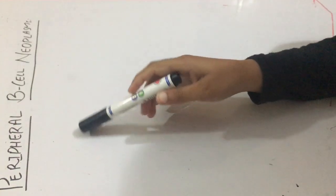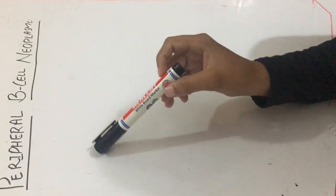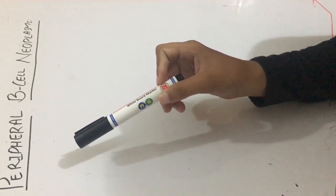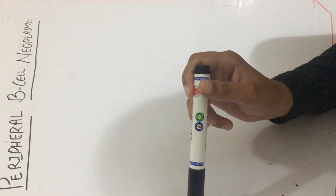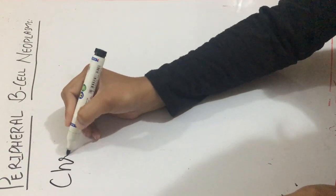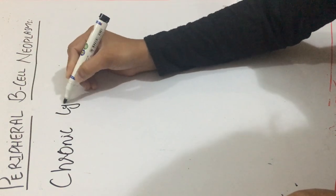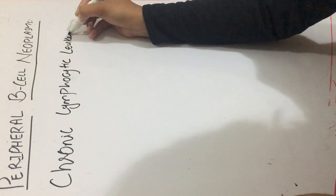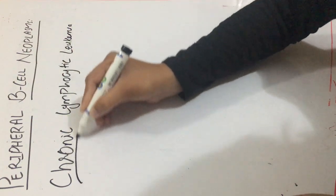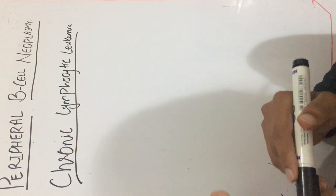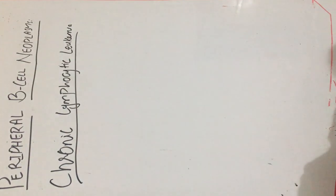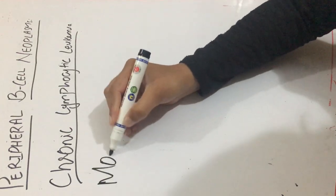Today the topic of discussion is peripheral B-cell neoplasms. In the previous lecture we discussed about the precursor B-cell neoplasms, mainly acute lymphoblastic leukemia. Now we will discuss about the peripheral B-cell neoplasms. The main example is chronic lymphocytic leukemia. First we will discuss about the morphology of chronic lymphocytic leukemia.